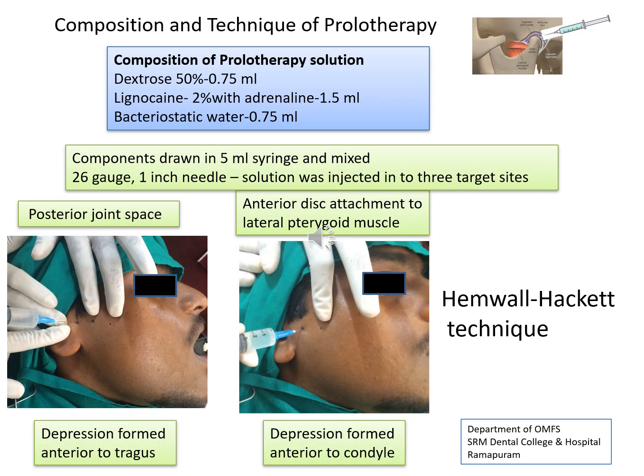The composition and technique of prolotherapy consists of 50% dextrose, 2% lignocaine with adrenaline, and bacteriostatic water. These components are drawn in a 5 ml syringe and mixed prior to injection. Using a 26-gauge 1-inch needle, the solution is injected into three target sites after painting and draping, using the Hackett method.